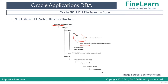Then we have the patch directory, which contains all the patches required to apply. For example, if I'm applying five patches using the adop tool, whenever I run adop and give the list of patches to apply, it will check in this location whether all the patches to be applied are present or not. So when you download patches from support.oracle.com, you have to place all the patches to be applied in this directory.